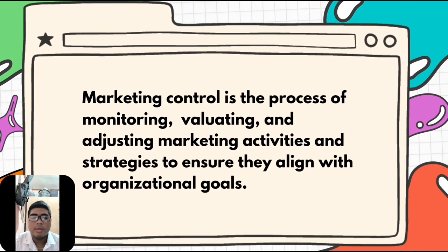Marketing control involves setting specific performance standards and targets which serve as benchmarks for success. Monitoring and measuring actual performance against these standards is crucial to track progress and identify trends. By collecting and analyzing relevant data such as sales reports, marketing research, and customer feedback, marketers gain insights to make data-driven decisions. Based on these insights, corrective actions can be taken to optimize marketing effectiveness and efficiency. This may involve adjusting strategies, reallocating resources, or revising pricing and promotion approaches. Ultimately, marketing control helps maximize ROI and ensures that marketing efforts contribute effectively to overall business objectives.